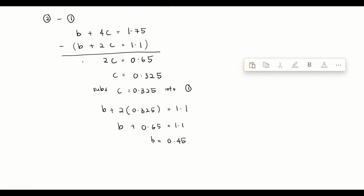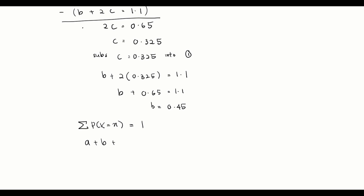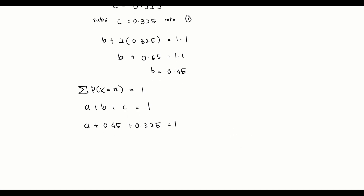We still need to find a. We know that the sum of all probabilities equals 1, so a plus b plus c equals 1. Substituting b equals 0.45 and c equals 0.325, we get a plus 0.45 plus 0.325 equals 1, so a equals 0.225. Our final answers are: a equals 0.225, b equals 0.45, and c equals 0.325.